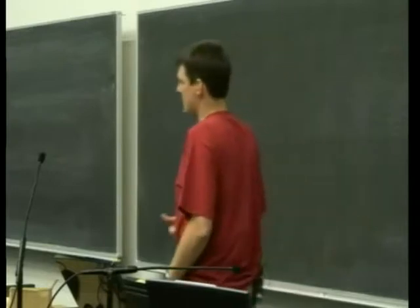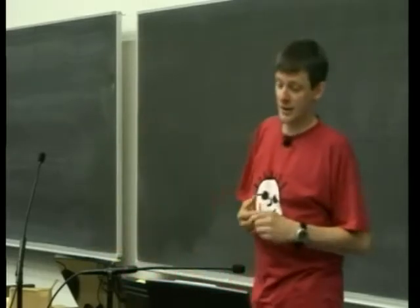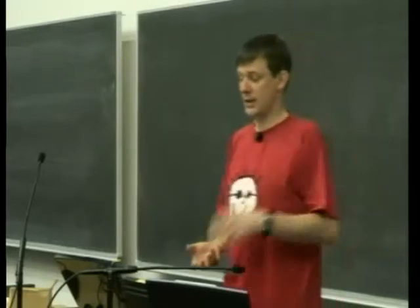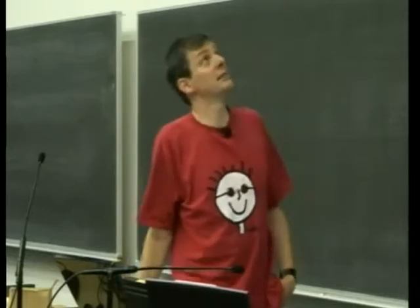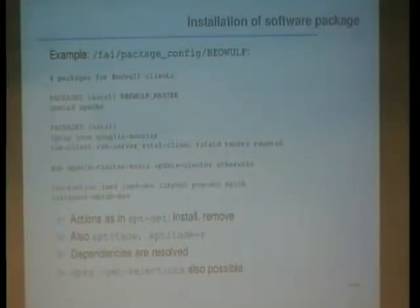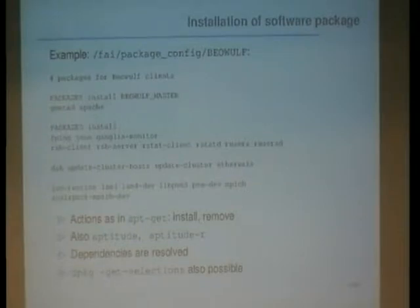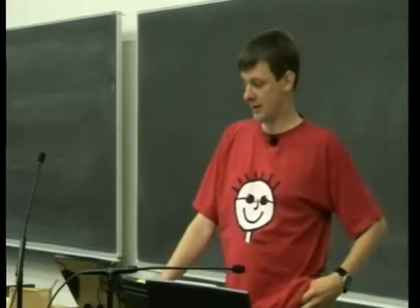Once the file systems are created and mounted, we install the software. Using a simple ASCII file format you define which packages should be installed. We use apt-get or aptitude for installation. You can do logical AND — for example, packages 'gmeterd' and 'apache' will only be installed if the machine belongs to both classes 'beowulf' and 'beowulf_master'. All other packages listed are installed for all machines belonging to class 'beowulf'. We also support the dpkg get-selections format.